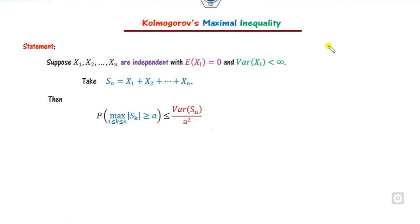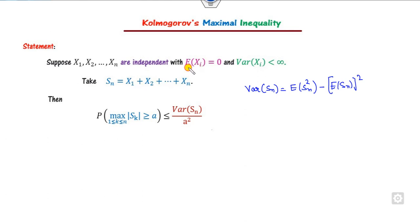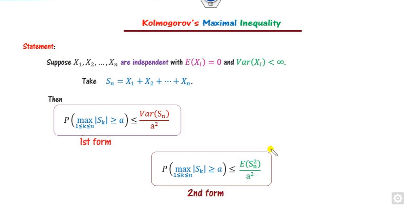Regarding the variance of S_n: we know Var(S_n) = E[S_n²] - (E[S_n])². Since each X_i has mean zero, E[S_n] is also zero, so Var(S_n) = E[S_n²]. This allows us to replace Var(S_n) with E[S_n²], which is called the second form of the Kolmogorov maximal inequality.